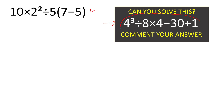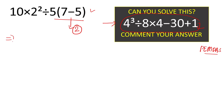For the first question, we will follow the order of operations. First, preference is given to the parenthesis, which gives us 7 minus 5 equals 2. So we rewrite our question as: 10 times 2 squared, divided by 5, times 2.